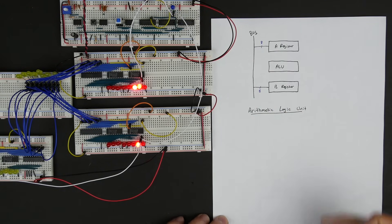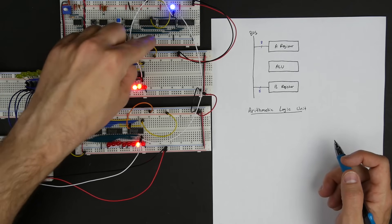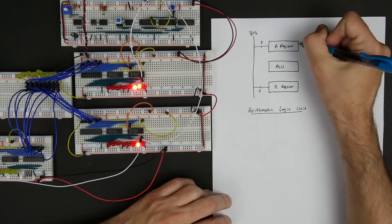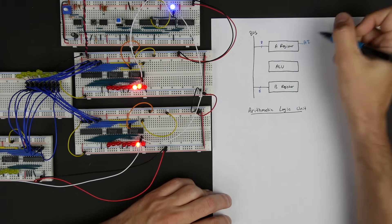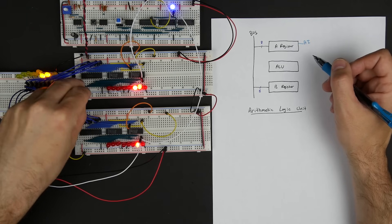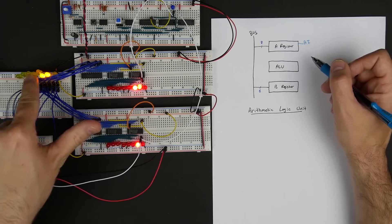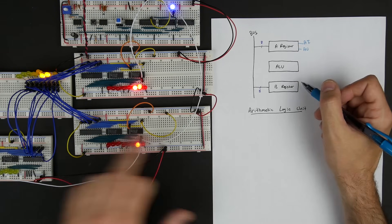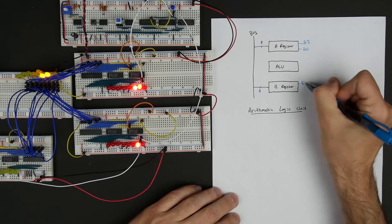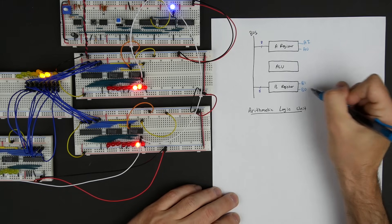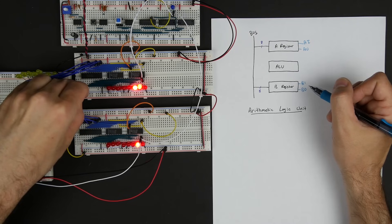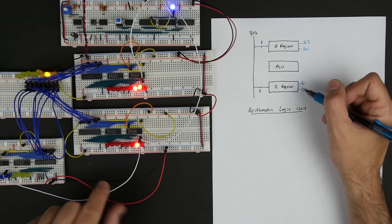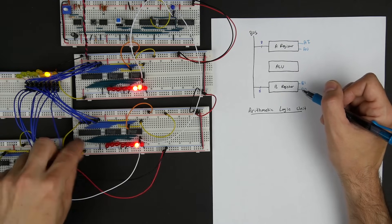We've also got some control signals. There's a control signal that allows us to load a value from the bus into the A register — that's our A-in signal. Then we also have our A-out signal, which outputs the contents of the A register to the bus. Same thing with B — we have a B-in and a B-out for loading the B register and putting its contents onto the bus. When activated, you'll see the two goes out on the bus, and then other parts of the computer can read that value.